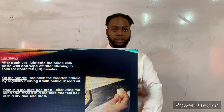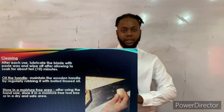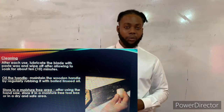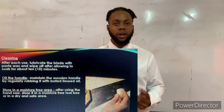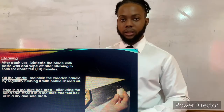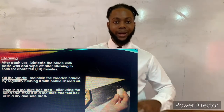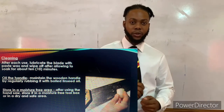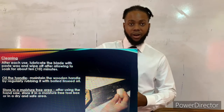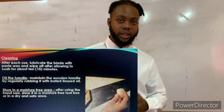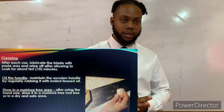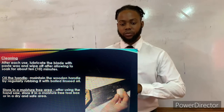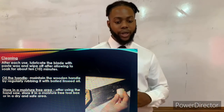By rubbing oil on the wood, it's just like rubbing coconut oil or cream on our skin to keep it shiny, smooth, and nice. In the same way, we rub oil on the handle to keep it smooth and healthy so it won't crack when we use it. After every use, clean the handle and then rub the oil on it.